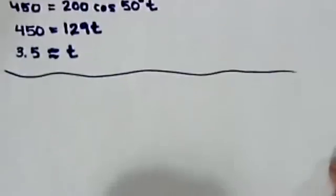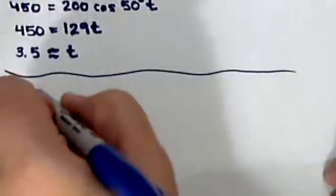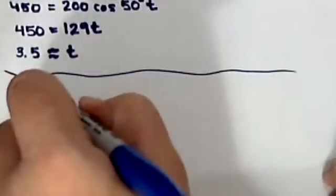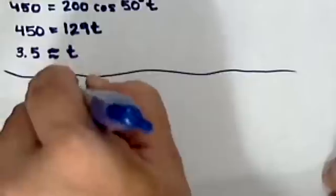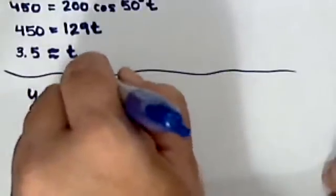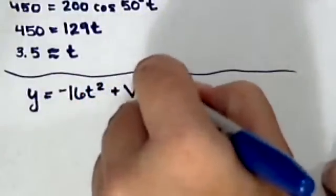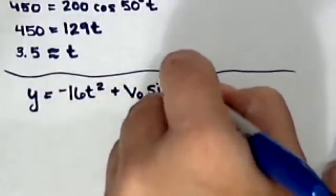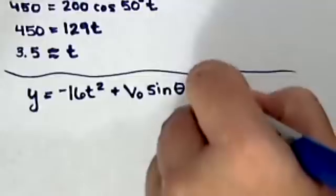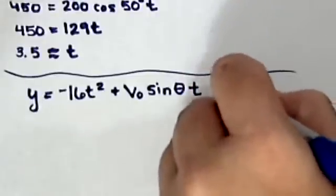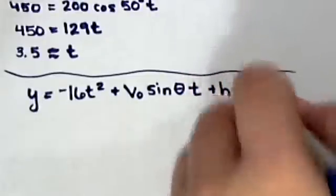To figure that out, we're going to use our y component, and that tells us the height. So the formula is y equals negative 16t squared plus v₀ sine theta t plus h₀.